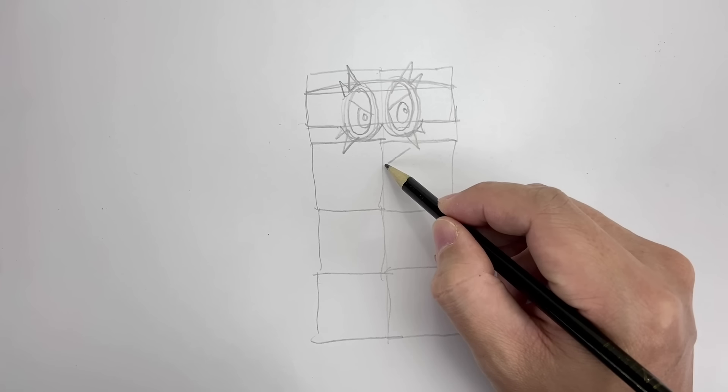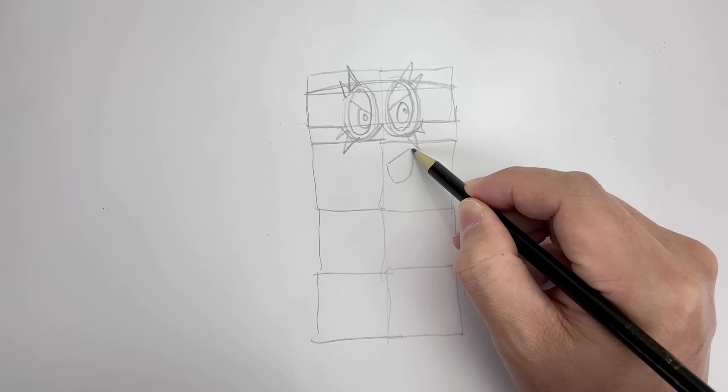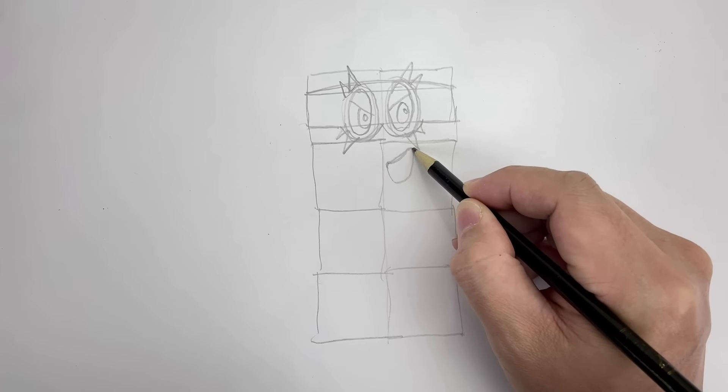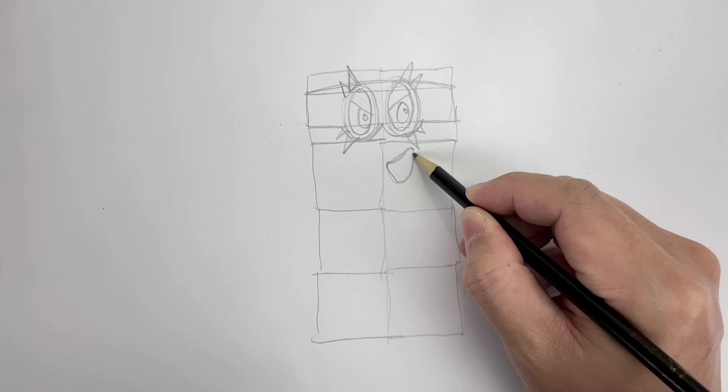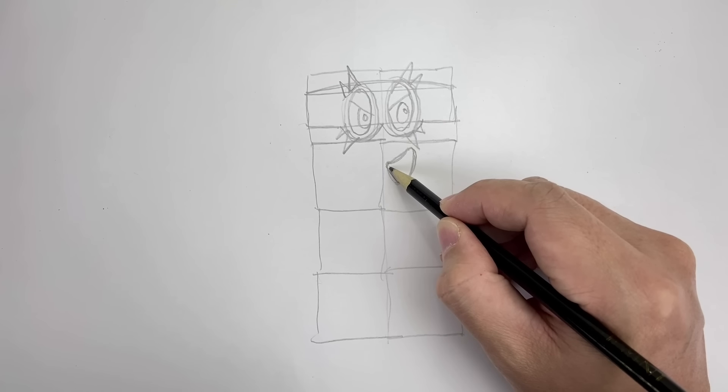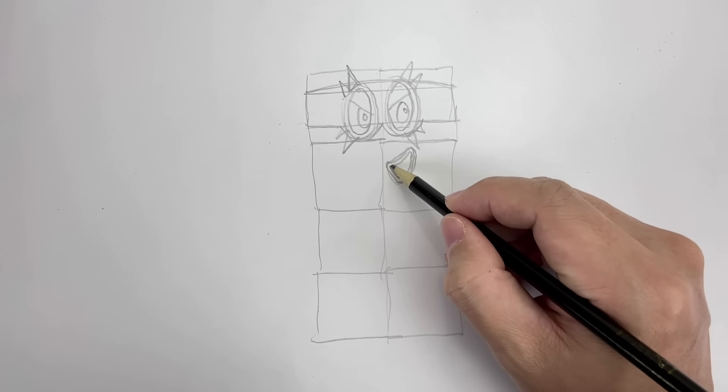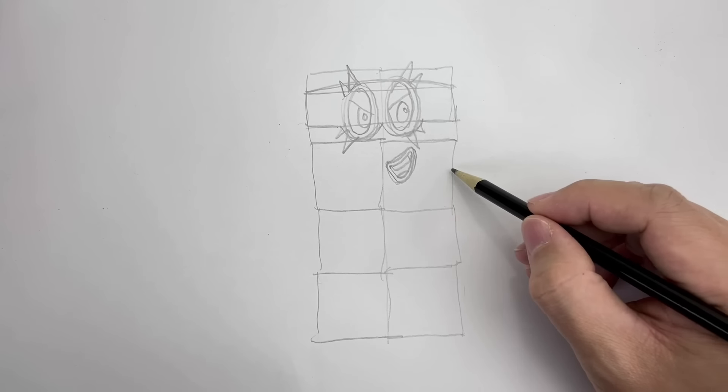Then draw a half circle for his mouth, slightly leaning towards the right. Trace an inner half circle for his lips. And draw a line across the top of his lips for his teeth. Add a curve for his tongue.